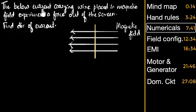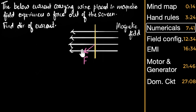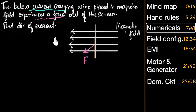Here's the first numerical. A current carrying wire placed in the magnetic field experiences a force out of the screen. Find the direction of the current. The wire is experiencing a force out of the screen, coming towards you. Which hand rule should I use? I start by asking: should I use my right hand generator rule? Is current being generated here? The wire is a current carrying wire — the current was already there; the current is causing the force. So there is no induction, current is not being generated. Therefore, I'm not going to use my right hand generator rule — I have to use my left hand rule.